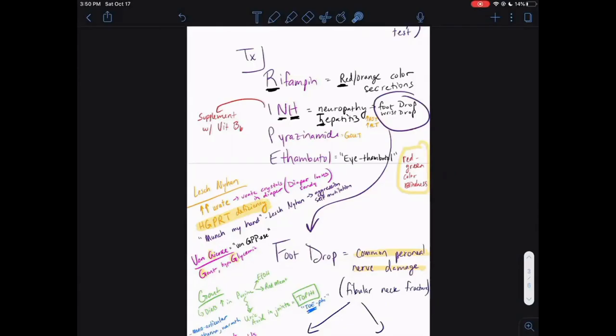Sideroblastic anemia can present with isoniazid use, and the reason is because sideroblastic anemia is from a deficiency of B6 oftentimes. So what happens with sideroblastic anemia? A B6 deficiency can cause sideroblastic anemia.